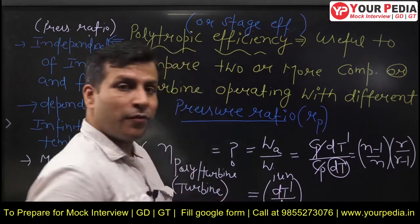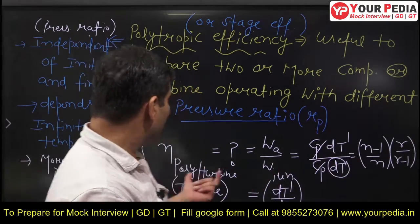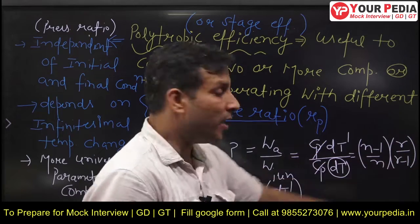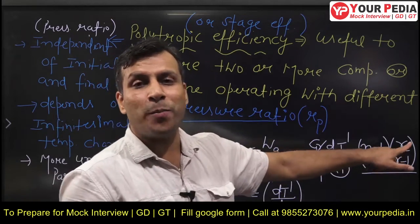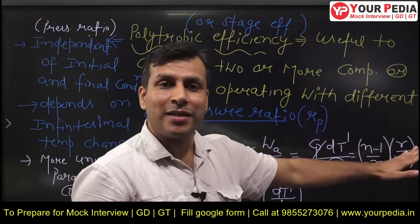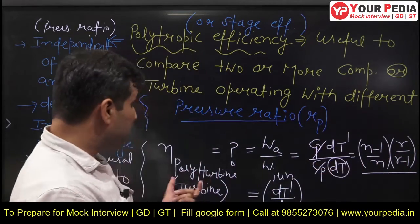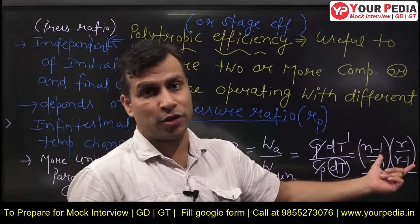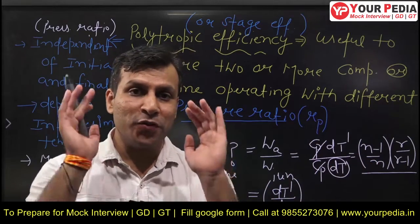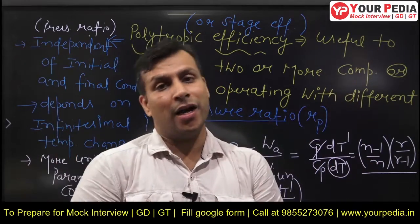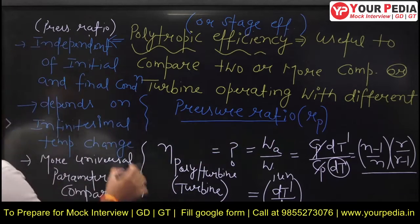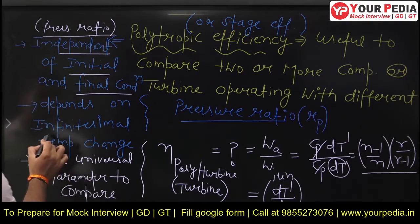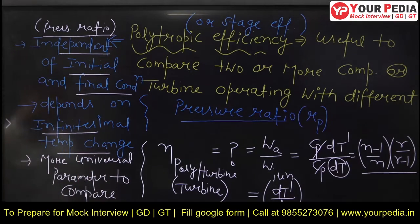How do we get this relationship? If you solve this, you get polytropic efficiency = (n−1)/n × γ/(γ−1). Clearly from this expression there is no pressure ratio term and no initial temperature or pressure term. So this polytropic efficiency is independent of the initial conditions and independent of the pressure ratio. How to get that derivation briefly - let me discuss so you will get a clear idea about this polytropic efficiency.